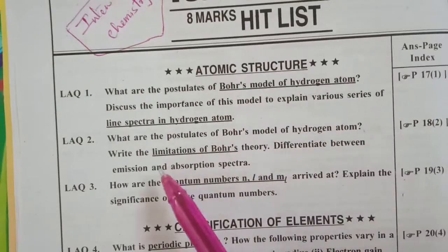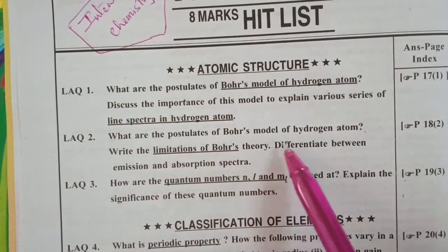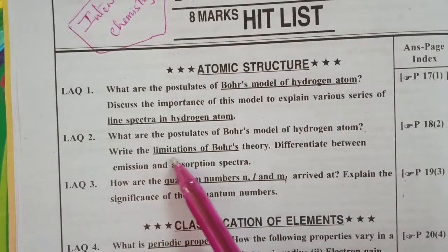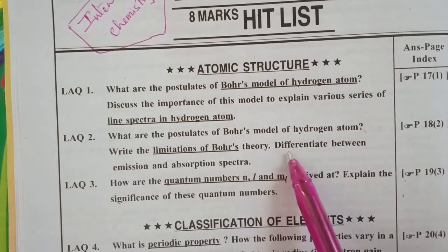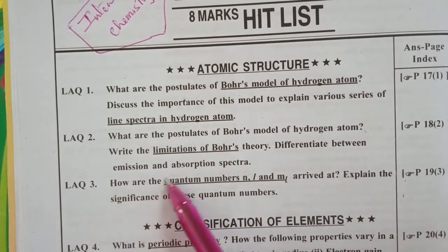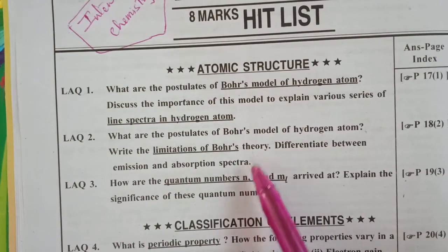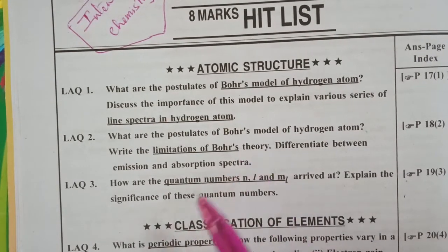The first question is, what are the postulates of Bohr's model of hydrogen atom? Almost same one, write the limitations of Bohr's theory, differentiate between the emission and absorption spectra. This is the very most repeated question.